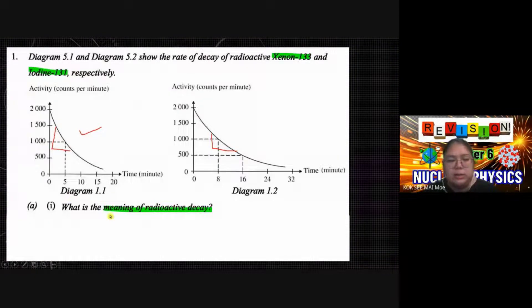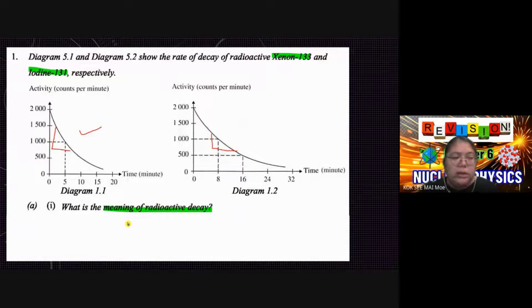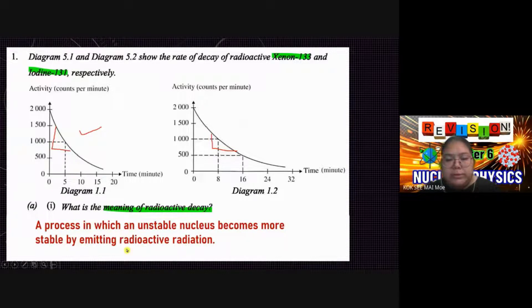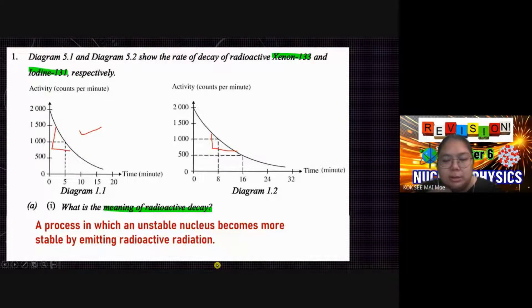What is the meaning of radioactive decay? Radioactive decay is a process in which an unstable nucleus becomes more stable by emitting radioactive radiation — that is alpha, beta, or gamma radiation. Together, these three are called radioactive radiation. This is the definition of radioactive decay.